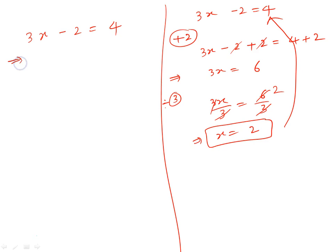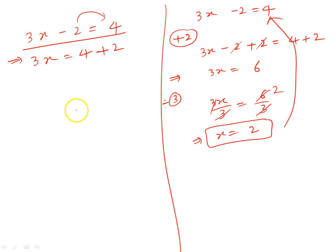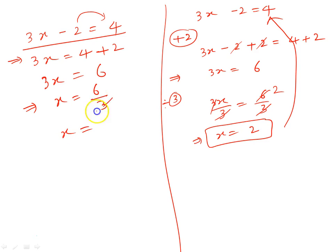Now let's try the transposition approach — whenever we move from left hand side to right hand side, the sign changes. To solve 3x minus 2 equal to 4, I move the constant to the right hand side. The 2 has a minus sign, so when it moves to the right hand side it becomes plus 2, giving 3x equal to 4 plus 2 equal to 6. Now 3 is multiplying x, so when it moves to the right hand side it becomes division: x equal to 6 by 3 equal to 2. We get the same solution. This transposition approach is most commonly used.